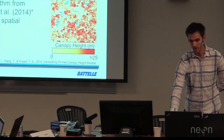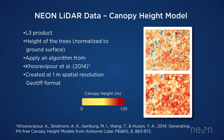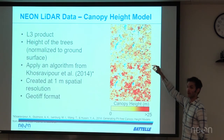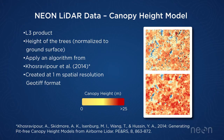Finally, we have the canopy height model, also an L3 product. A common issue in creating canopy height models from LiDAR is data pits — areas that go all the way down to the ground in the center of the canopy, which biases estimates gathered from the canopy height model. We use an algorithm from a referenced paper to take care of those data pits.